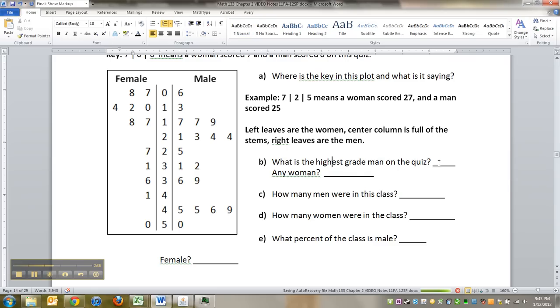All right, what was the highest grade for any man on the quiz? Well, the highest values are down here. The highest score for a man is 50, which also happened to be the highest score for a woman, because we have a woman here, 5 is her stem, 0 is her leaf. So 50 for a woman.